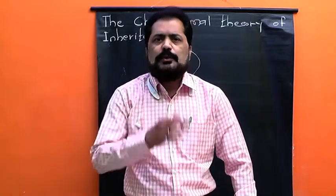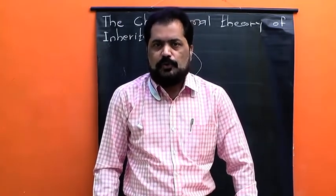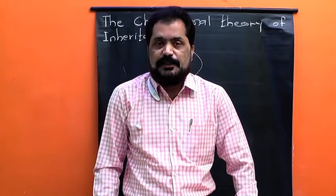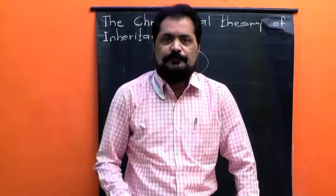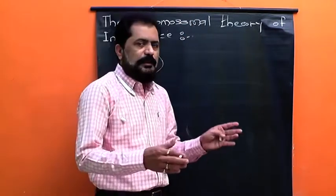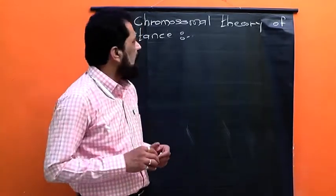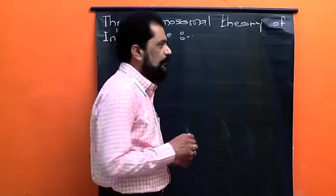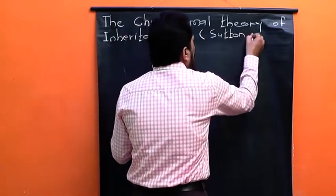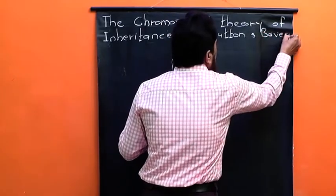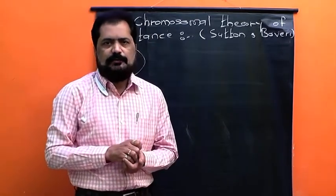Sutton and Bovery, these two different cytologists independently studied the behavior of chromosomes and put forth the theory namely chromosomal theory of inheritance. So first of all, we need to understand the highlights of this theory. Let us study the different principles.